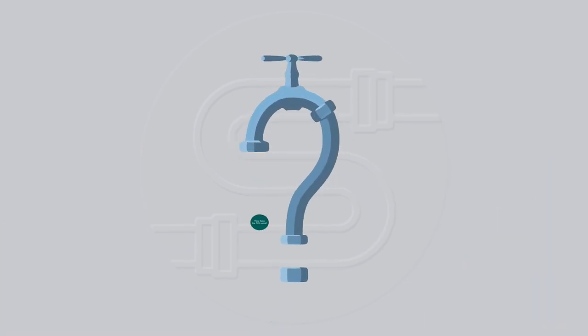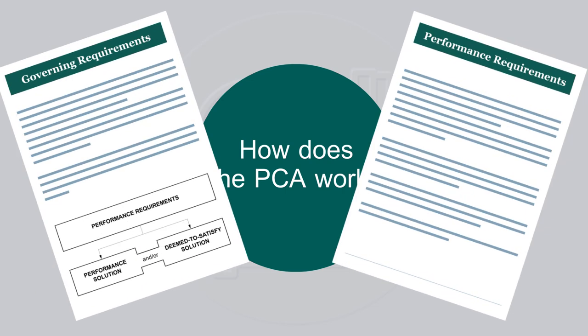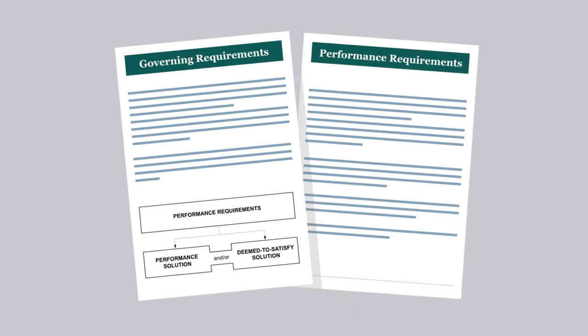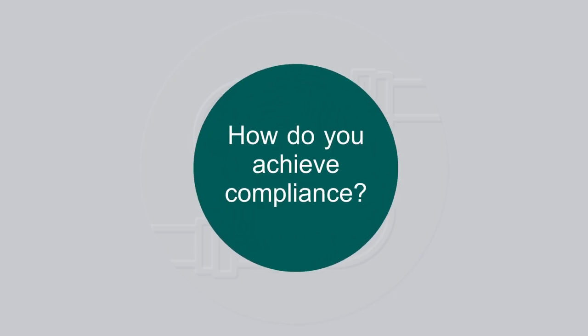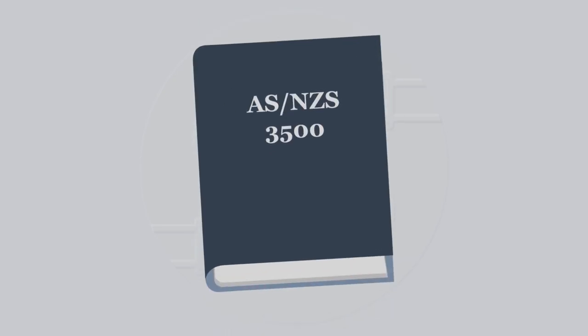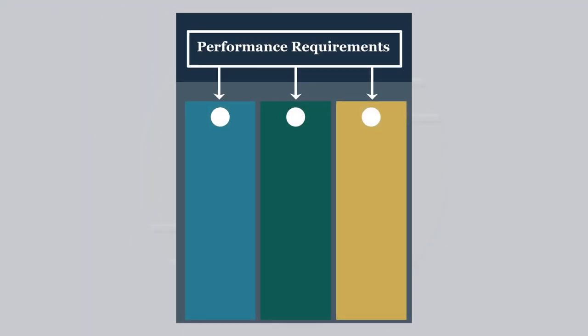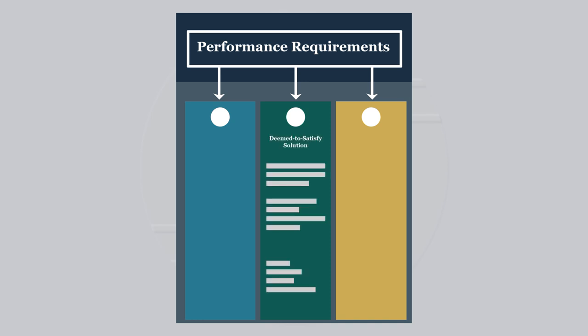How does the PCA work? The PCA is a performance-based code. This means, to comply with it, practitioners need to meet the performance requirements in accordance with the National Construction Code's governing requirements. The PCA references a number of documents, including standards such as the AS/NZS 3500 series. These documents can be used as a means of meeting the performance requirements, known as a deemed-to-satisfy solution.